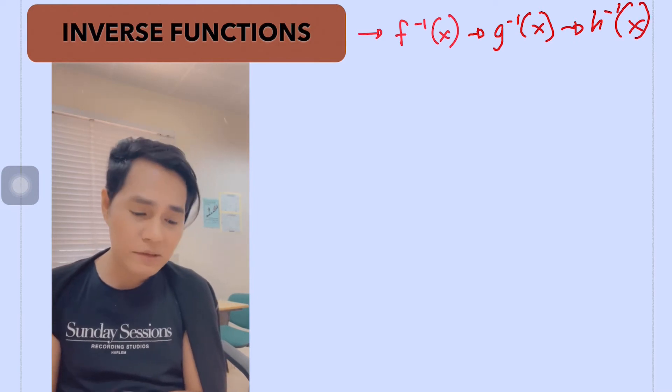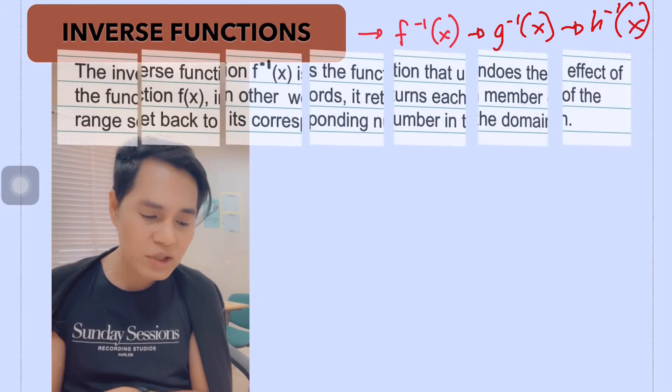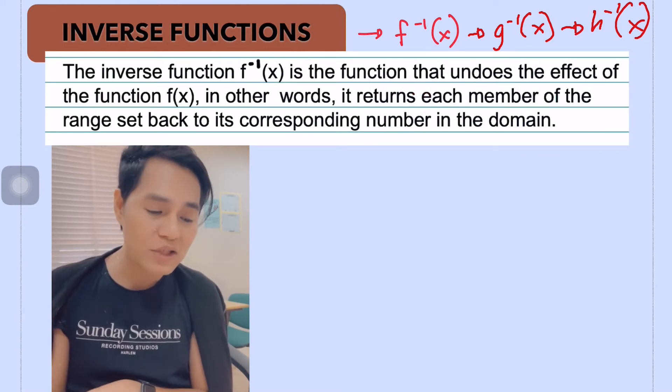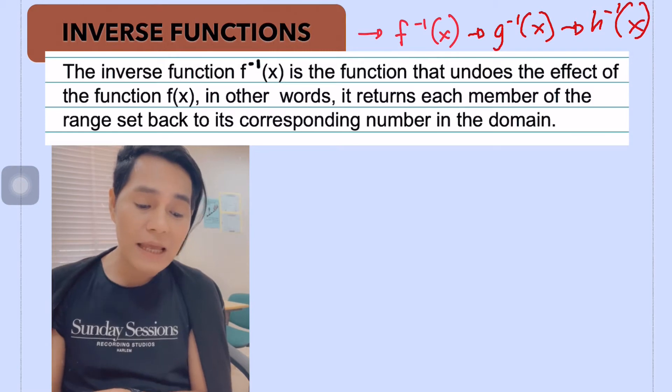So this is the formal definition. The inverse function is the function that undoes the effect of the function f(x). In other words, it returns each member of the range set back to its corresponding number in the domain.